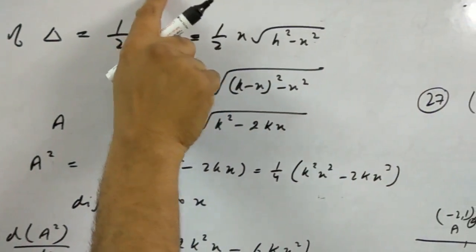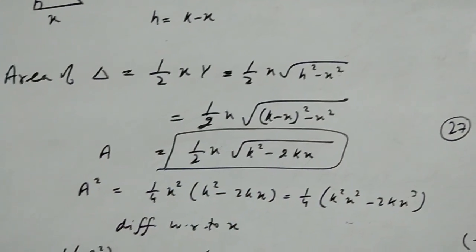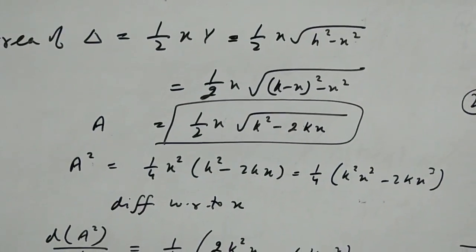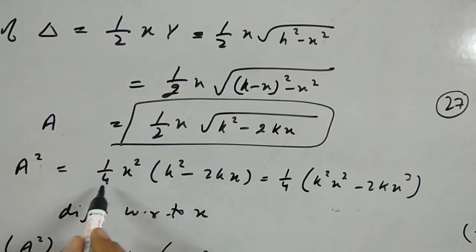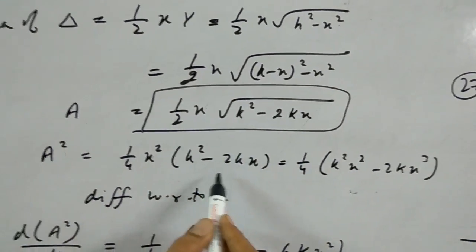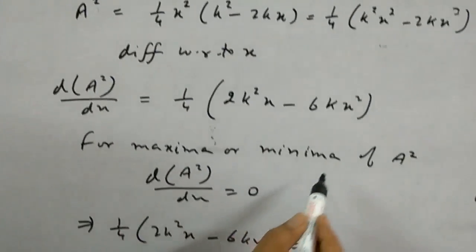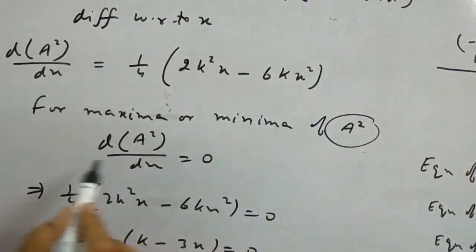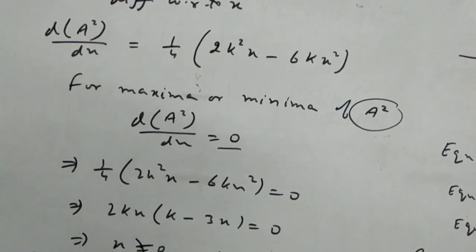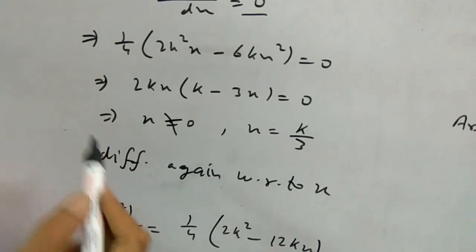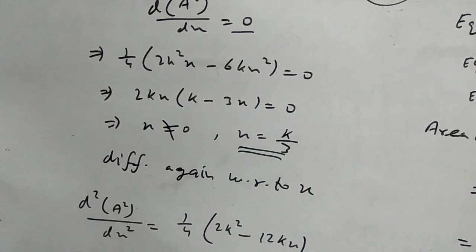What is h? h is k minus x. Substitute and simplify: A equals half x root of k squared minus 2kx. Now differentiate A with respect to x and equate to zero. We get two values: zero and k by 3. Zero is not possible as a side, so x equals k by 3.